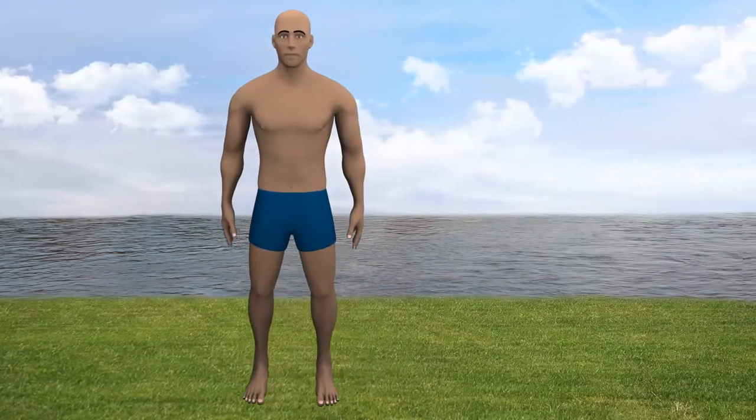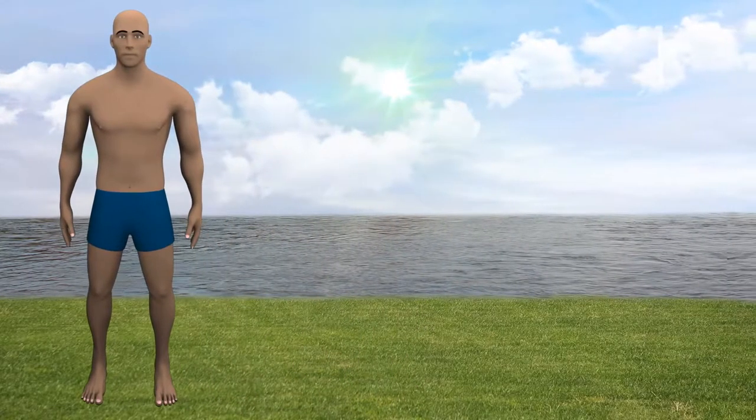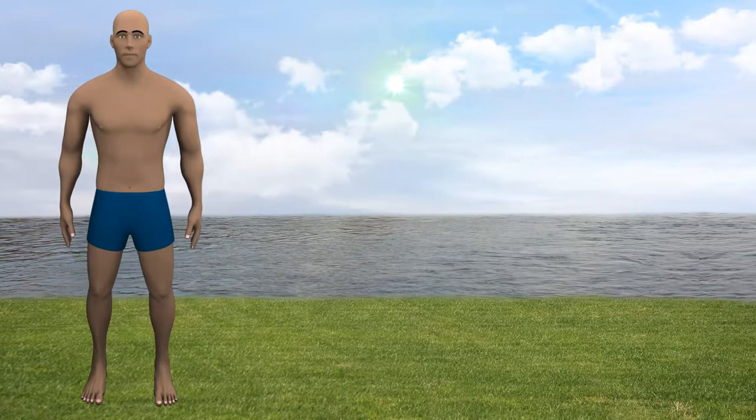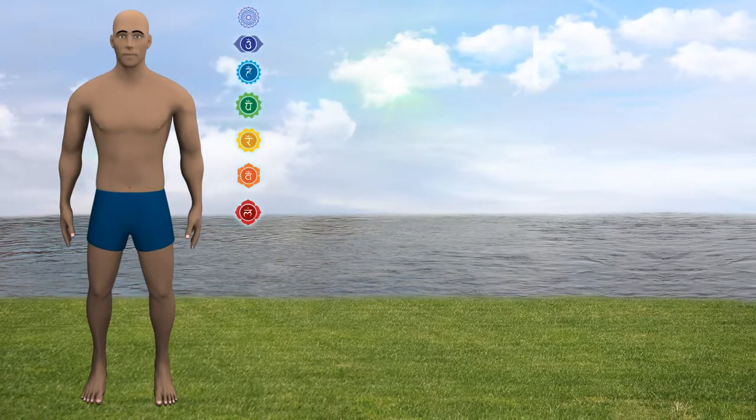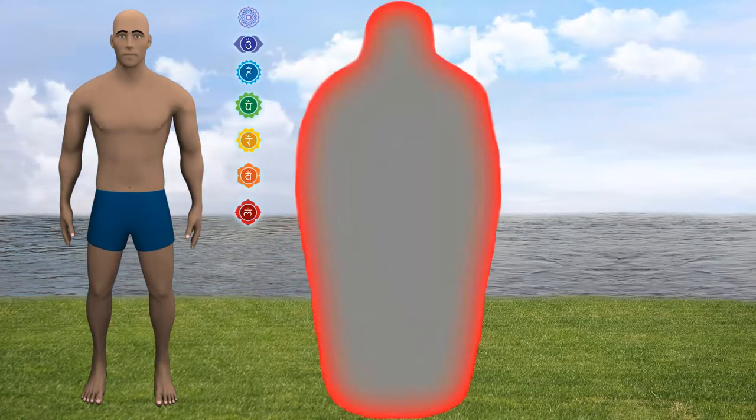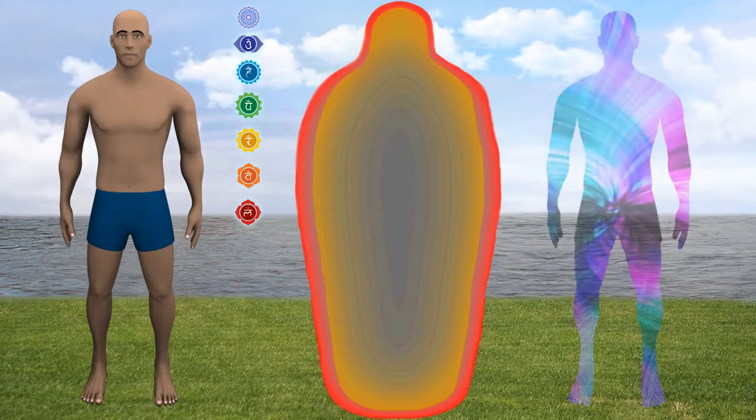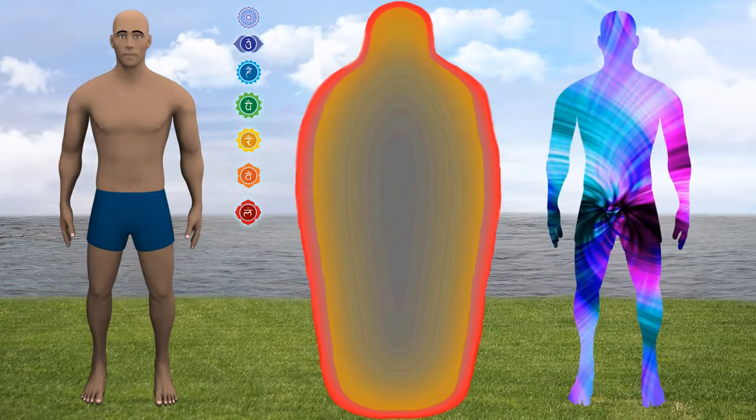Pranamaya kosh is made of prana or vital force and includes energy centers or chakras, outer and inner aura, and 72,000 nadis.